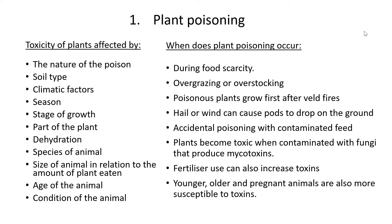The nature of the poison does determine how poisonous the plant is. Then also the soil type — chemically this can influence how poisonous the plant is. Climatic factors — meaning whether it's summer or winter, the season, and also whether it's a rainy area or a hot, dry and humid area. And then also the state of growth and which part of the plant — sometimes the leaves are poisonous, other times the flowers, other times the entire plant.